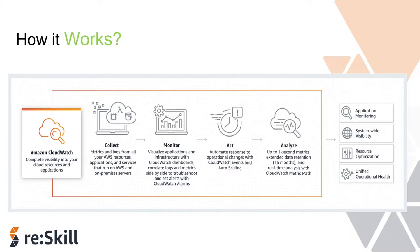In CloudWatch you can collect, monitor, act, and analyze. There is application monitoring, system-wide visibility, resource optimization, and unified operational health. CloudWatch collects monitoring and operational data in the form of logs, metrics, and events and visualizes it using automated dashboards. We can get a unified view of our AWS resources, applications, and services running on AWS or on-premises. We can create alarms based on metric threshold values, and deep dive into metrics, logs, and traces to better understand how to improve application performance.